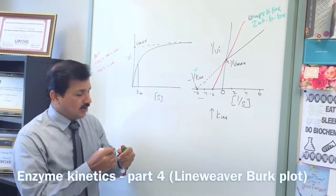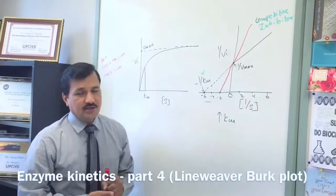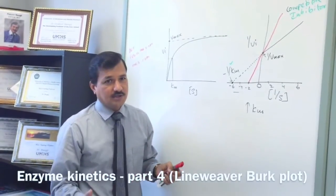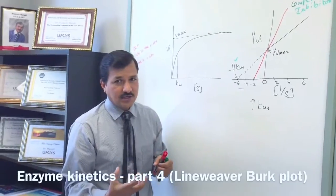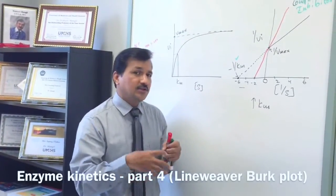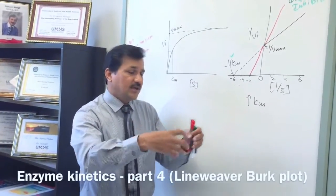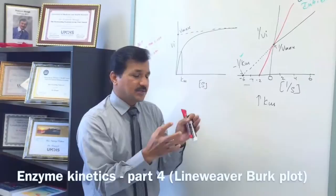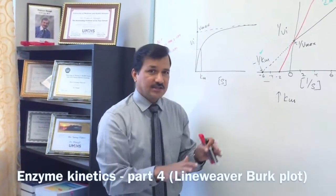Now let us see what a non-competitive inhibitor does. A non-competitive inhibitor is not a structural analog — there is no competition. It binds to a site other than the active site. By binding to this allosteric site, it changes the conformation of the active site, so the substrate does not fit well. Because of this improper fitting, reaction velocity decreases.